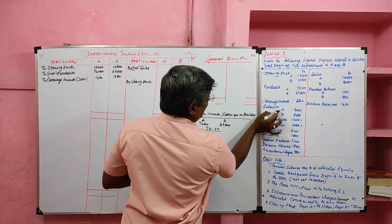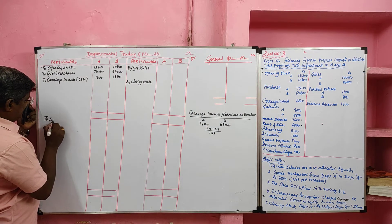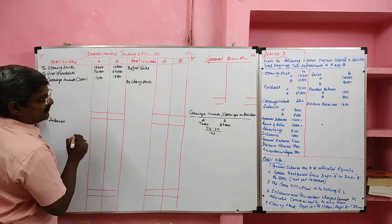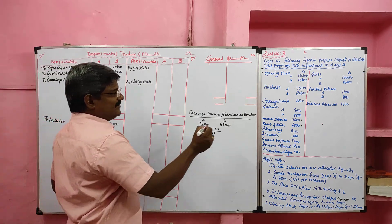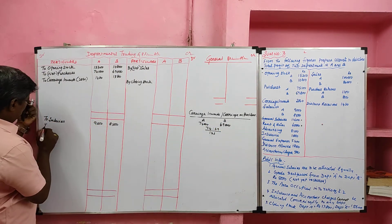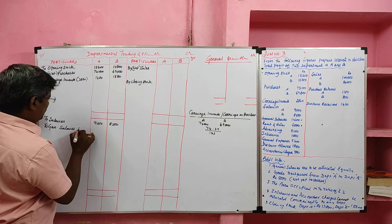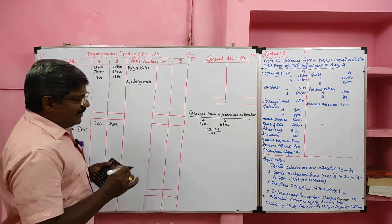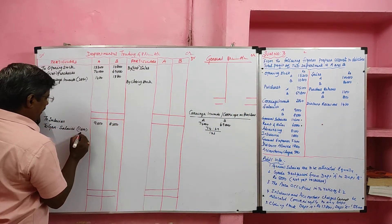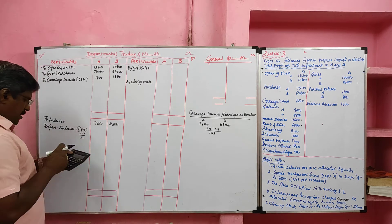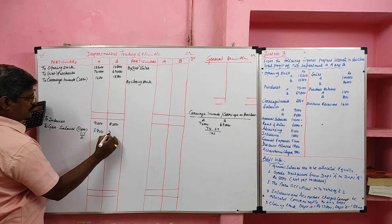Then salary: the salary for the respective departments are given individually, so we will not face any problem. Salary for department A is rupees 9,000 and for department B is 8,500. Then general salary: the problem says general salaries are to be allocated equally, meaning 1 is to 1. So 11,600 — half given to department A and half given to department B.